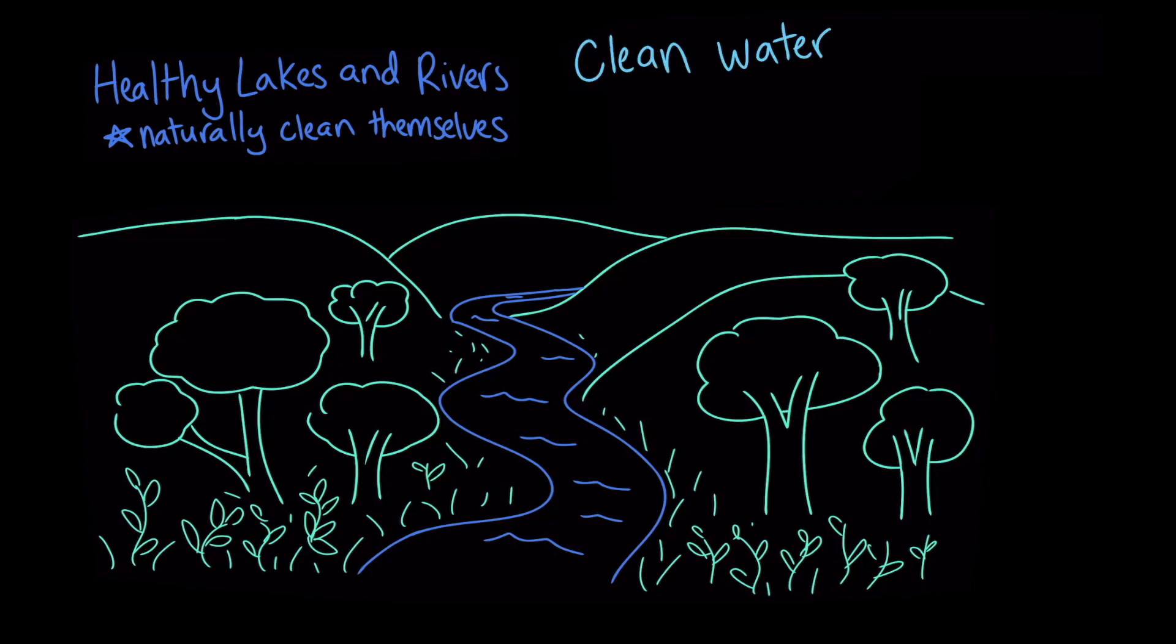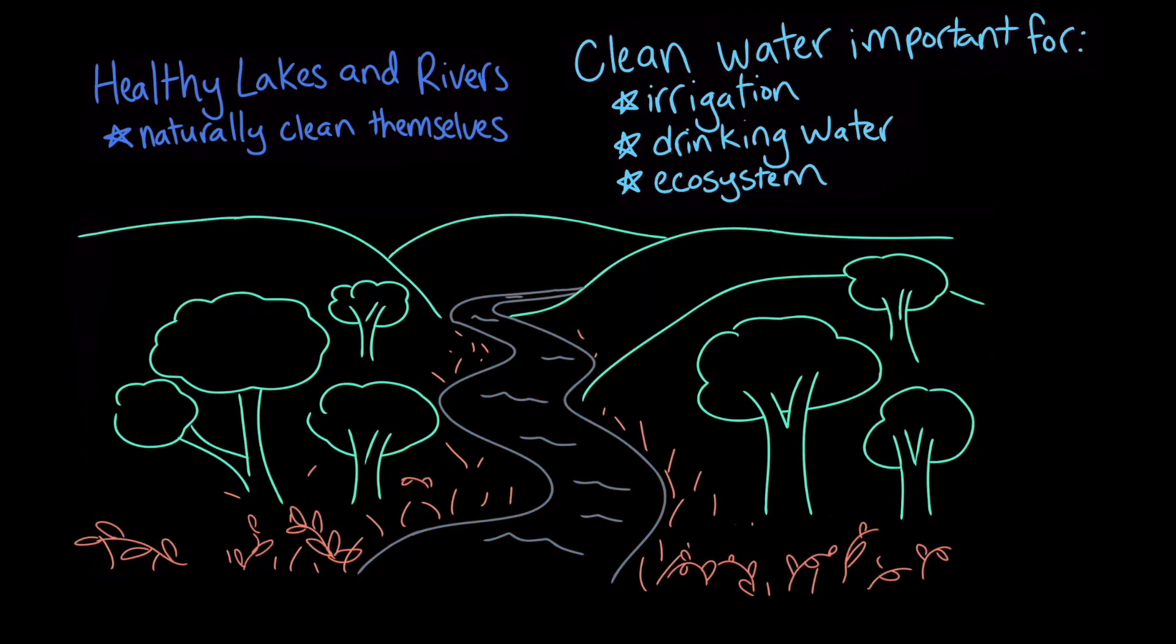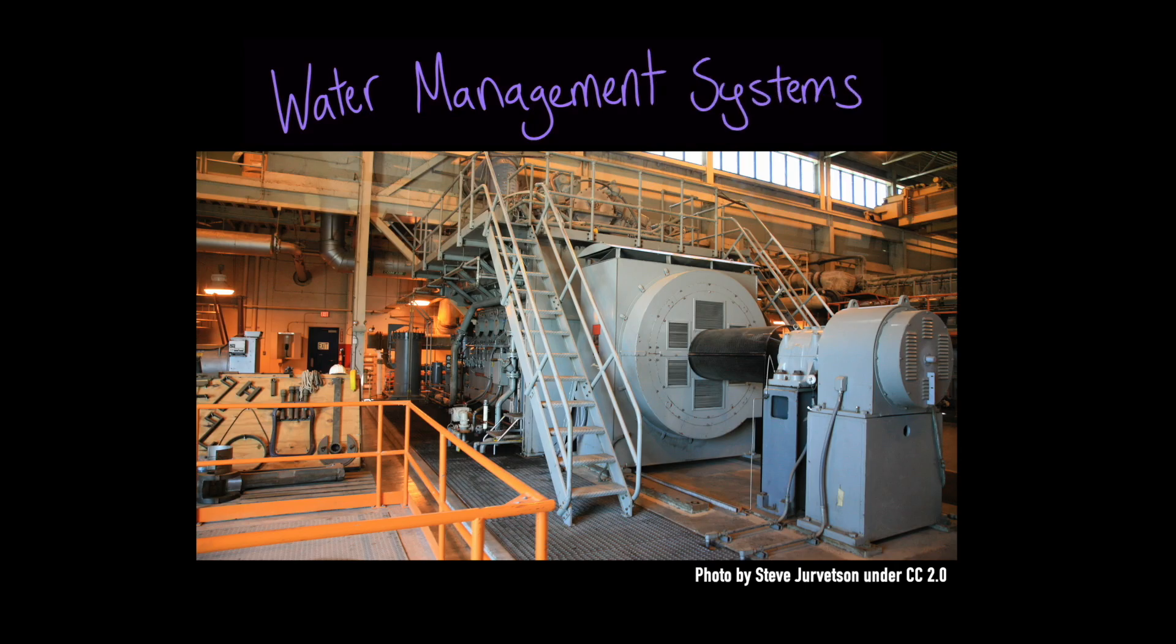The clean water produced by these systems is important for irrigation, drinking water, and the ecosystem. But when humans add sewage and stormwater pollution into rivers too quickly, natural ponds and streams can't keep up. The pollution can then build up and become a danger to wildlife and people. To prevent this from happening, many urban areas in developed countries use water management systems to treat their water waste.